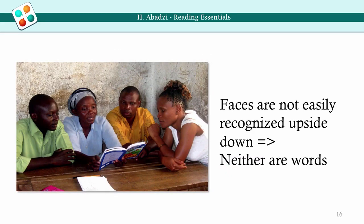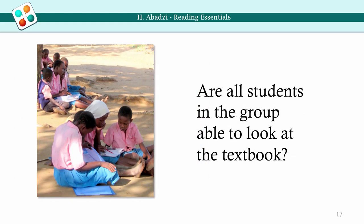Faces are not easily recognized upside down, and neither are words. Look at the eyes of the readers and the location of the book. Is the first person to the right able to read the text? Is she practicing reading right now? Remember from Module 3 that beyond the center of our vision, print looks blurry. A buddy reading project was implemented in Kenya, but it did not help many students read better. Look at one picture — are all students in the group able to read the textbook?